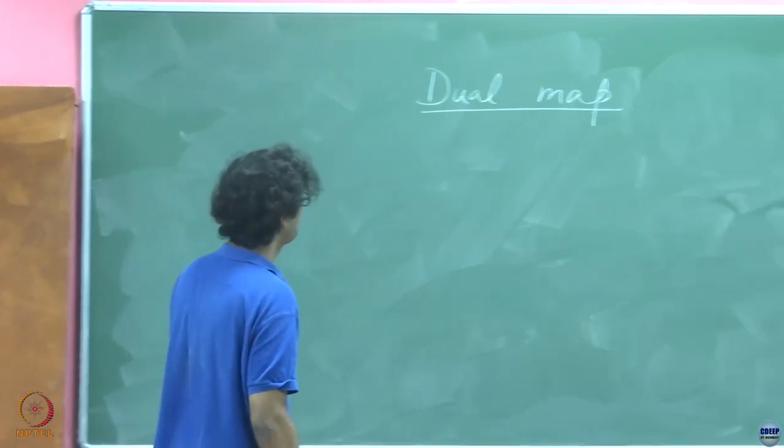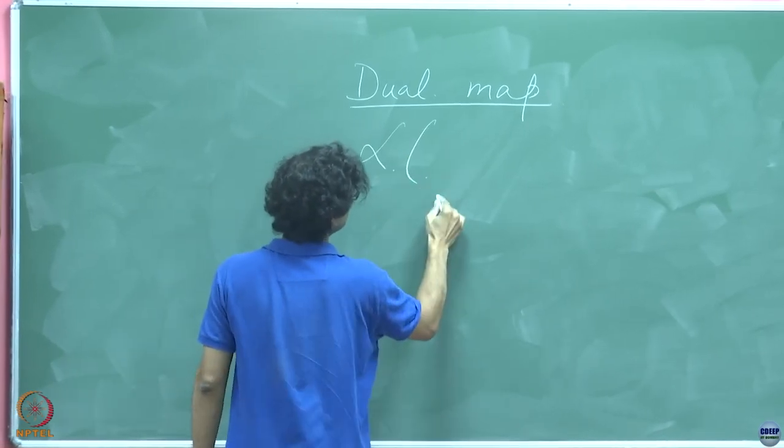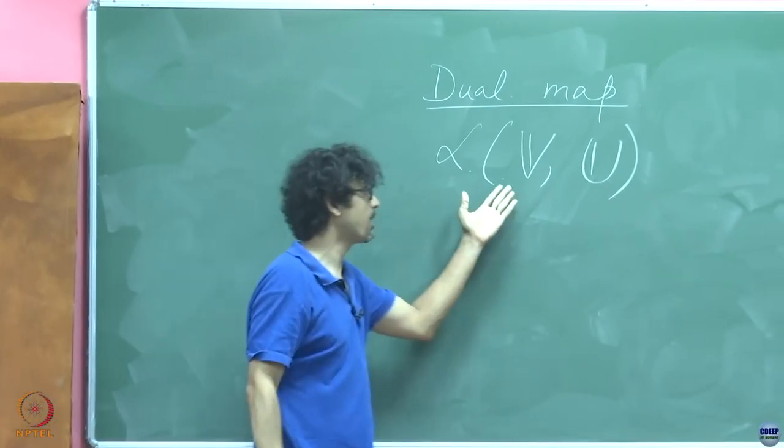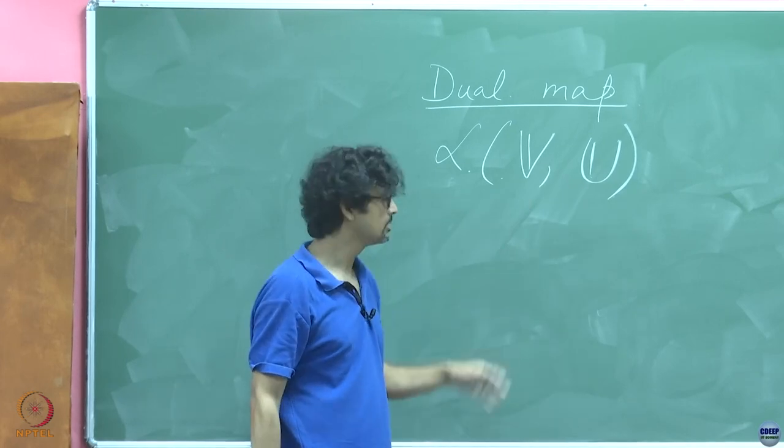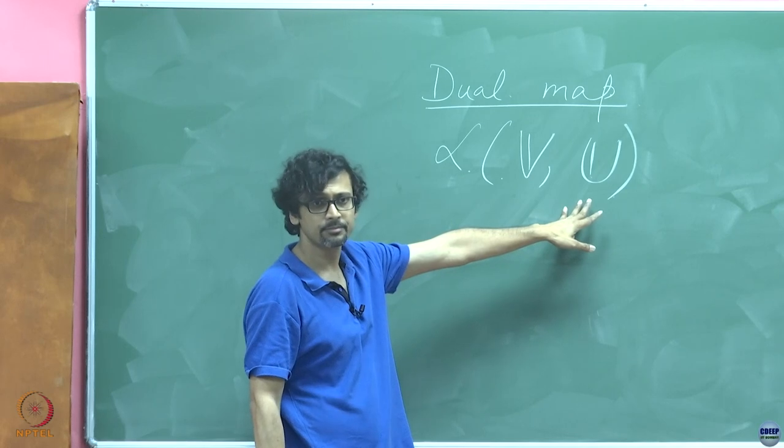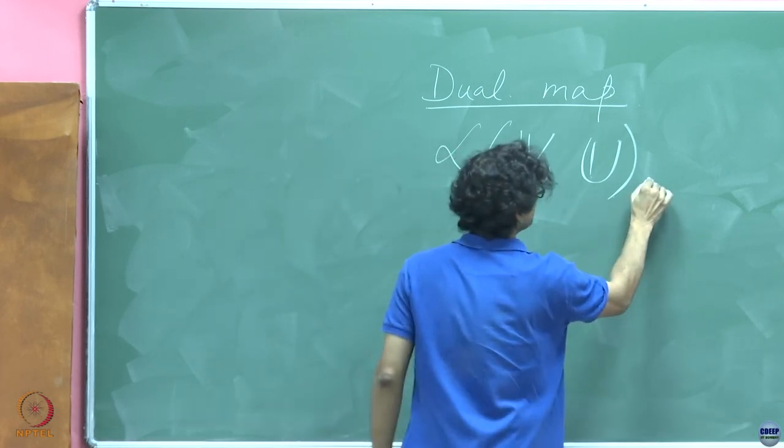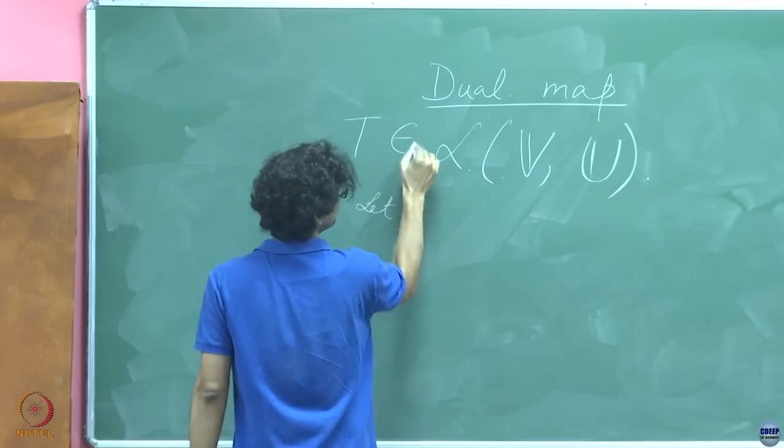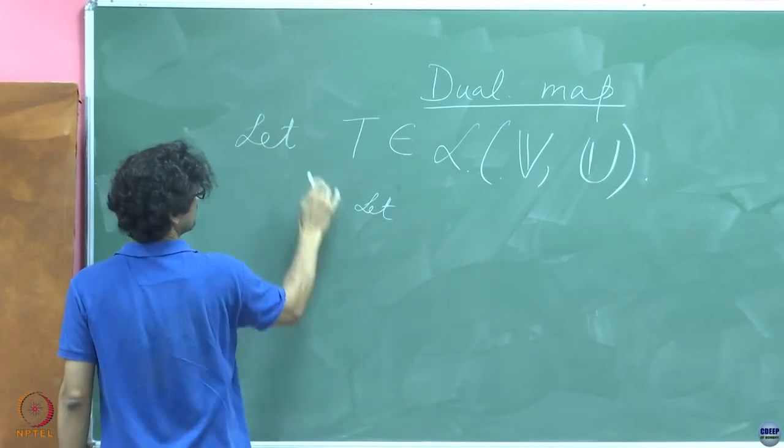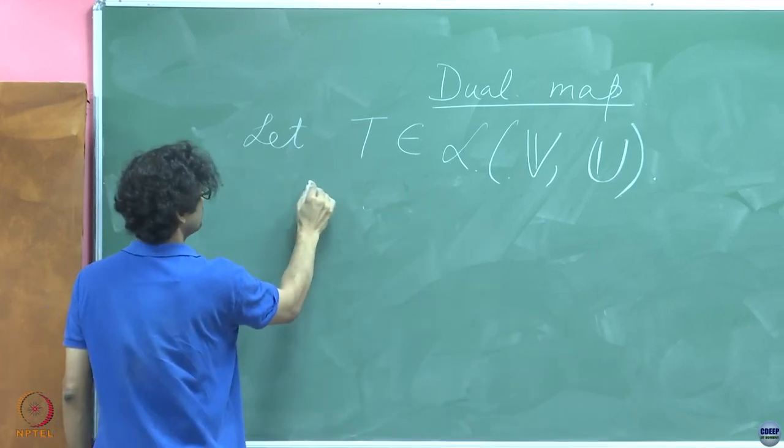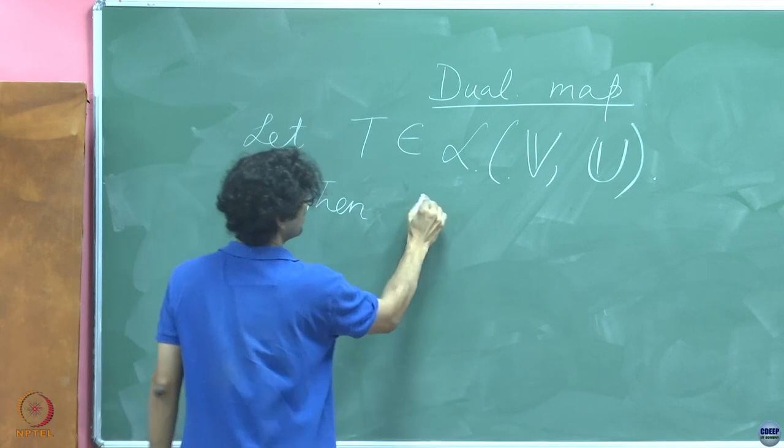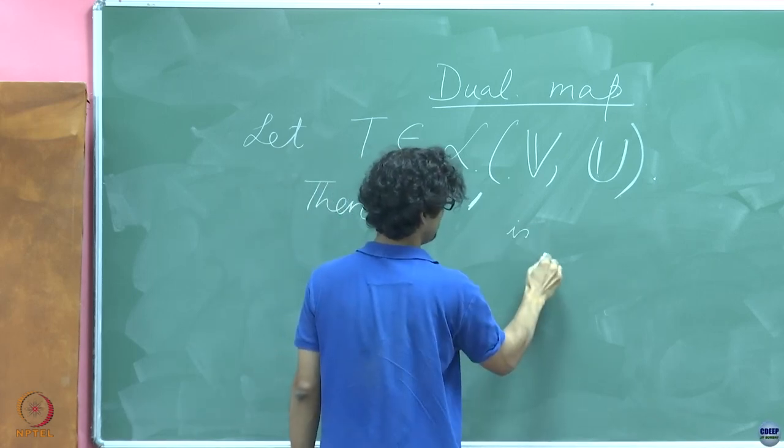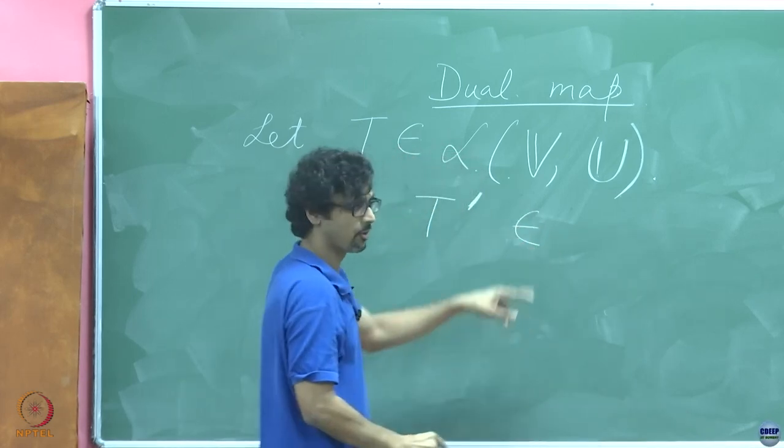So what is a dual map? Suppose you have linear maps from V to U. These are of course vector spaces as we have argued earlier. Now, let... okay, so T belongs to this. Then T prime, this is the dual map.